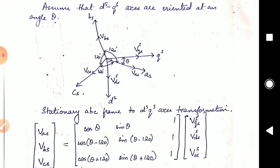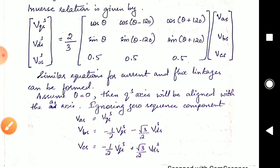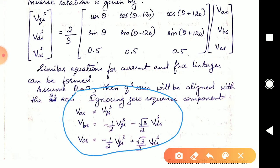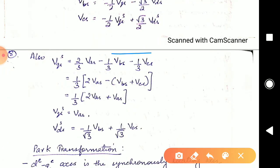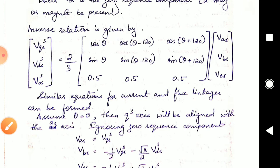Looking at the matrix, it is given as VAS, VBS, VCS equals something times VQS, VDS. We need it the other way around — the two-phase stationary terms equal something times the three-phase stationary terms. So we just take the inverse of the matrix. Applying the inverse gives a particular result. We have also substituted theta equal to 0, and I want all of you to substitute theta equal to 0 and verify whether you are getting these particular answers from both matrices.